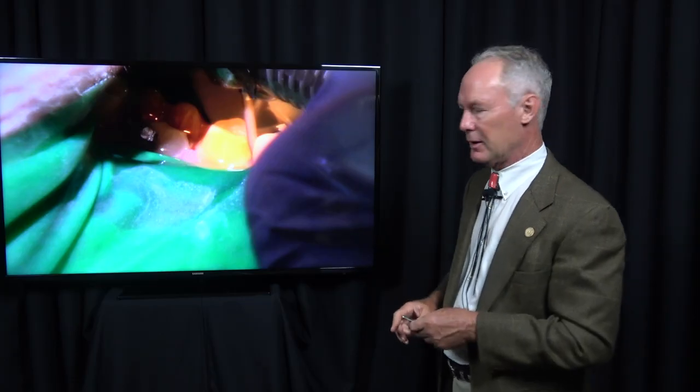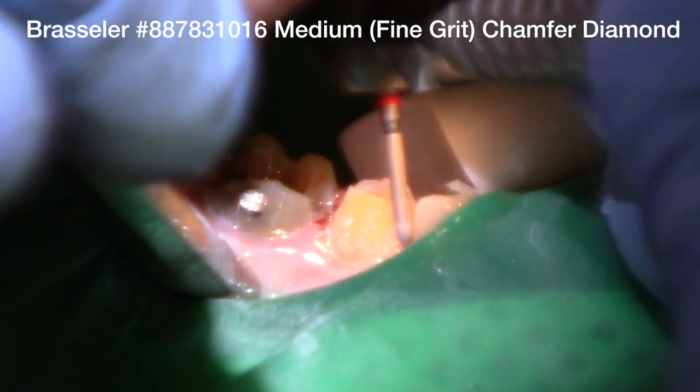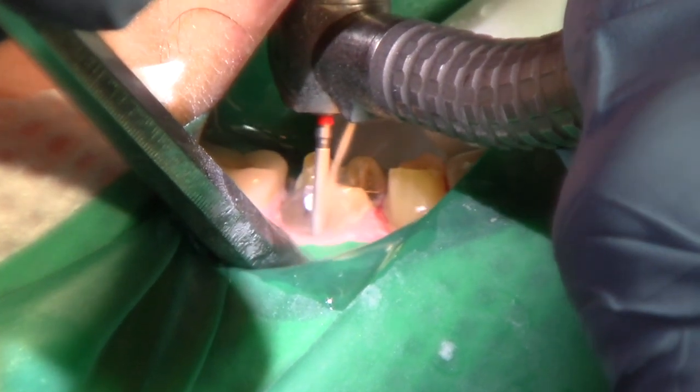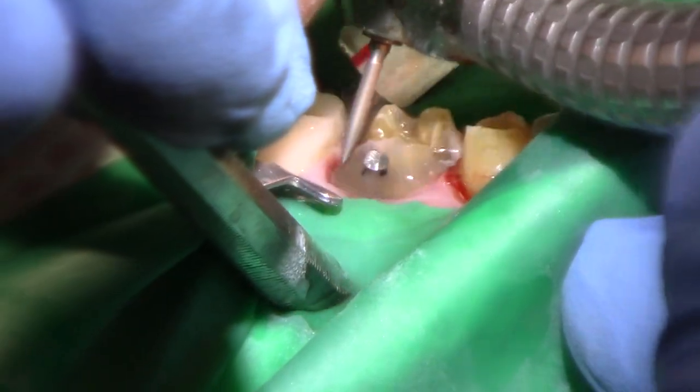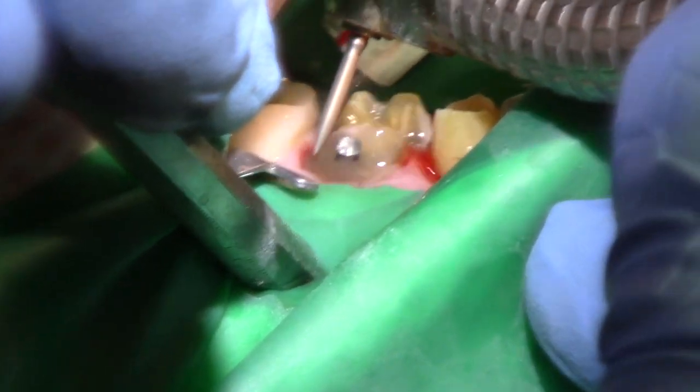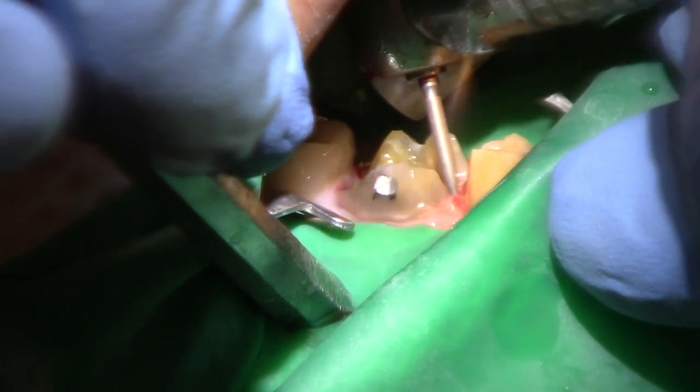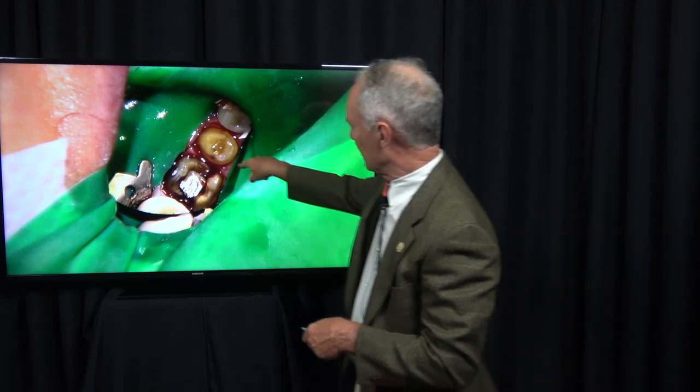This is a medium chamfered diamond, fine grit, and after I've used the barrel diamond for the bulk of the reduction, I'm placing my margins about a millimeter into the sulcus on the facial. Round all the line angles. You don't want any sharp line angles. You can see everything draws.